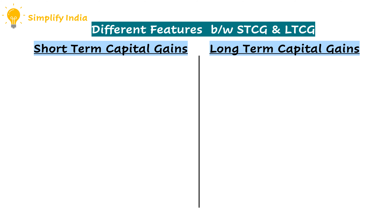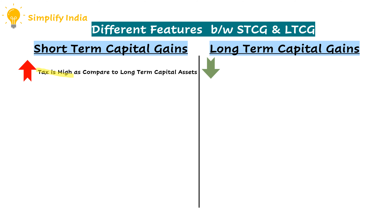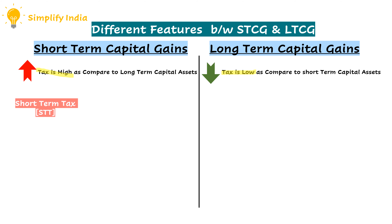Now we are going to learn the different features between short term capital gain and long term capital gain. In case of short term capital gain, tax is high as compared to long term capital gain, whereas in case of long term capital gains, tax is low. Next, STT — Securities Transaction Tax — is applicable on short term capital gain and is not applicable on long term capital gains.